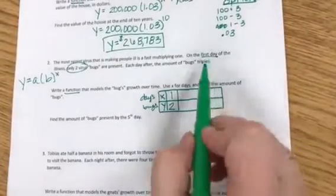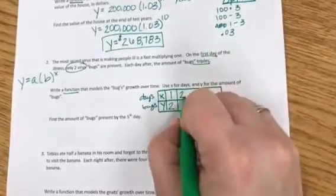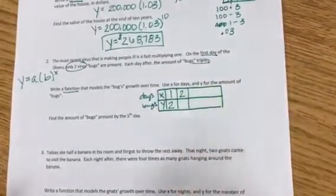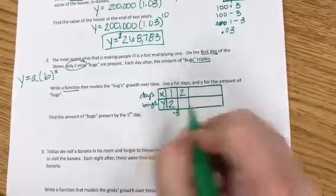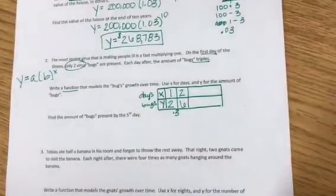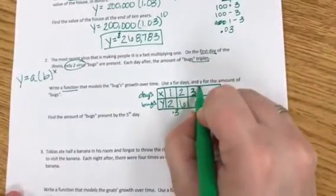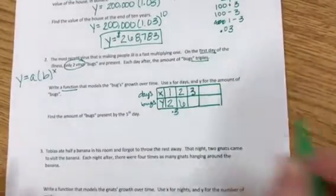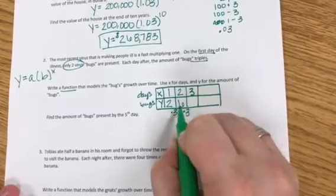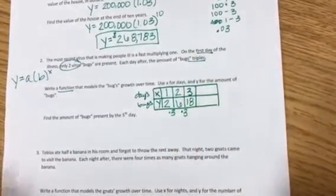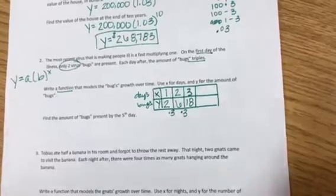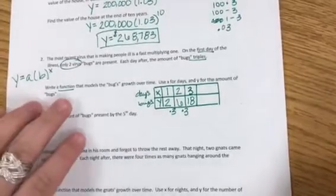Okay, now I know that it's going to triple every single time. So after the second day, triple means multiply by three. So if I take two and multiply by three, I'm going to end up with six bugs. Okay, on the third day I'm going to take six, so whatever I have now I'm going to multiply by three, which gives me 18 bugs.